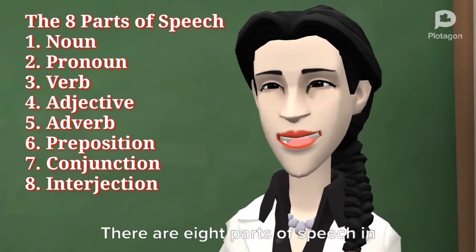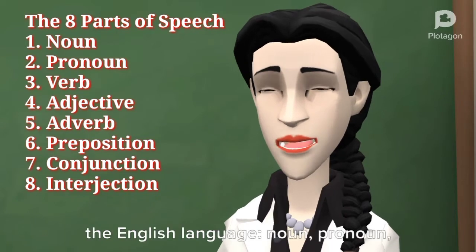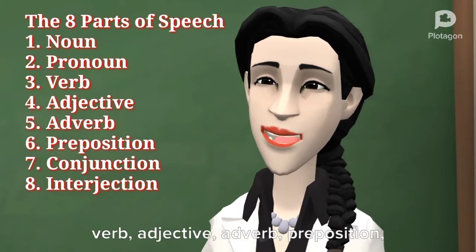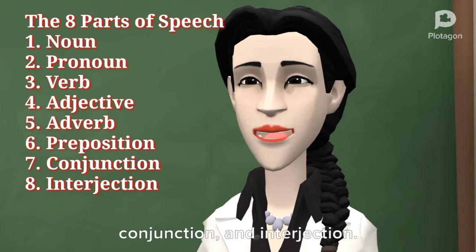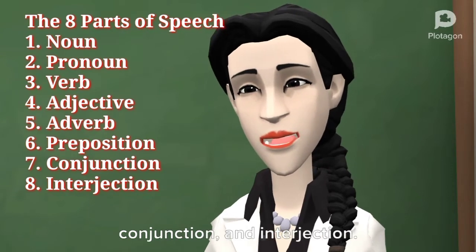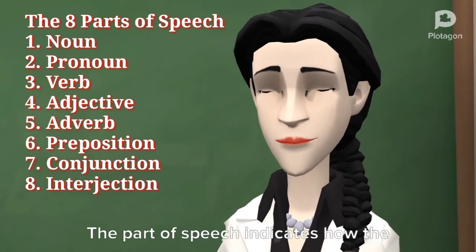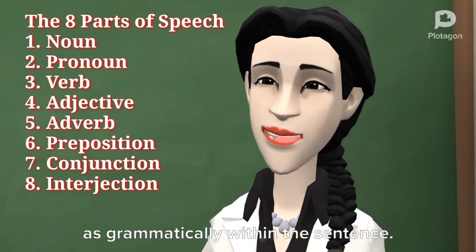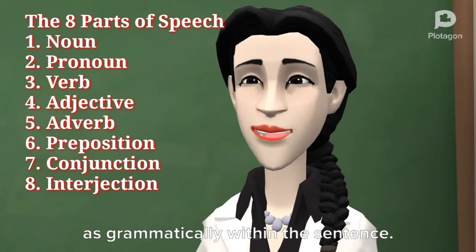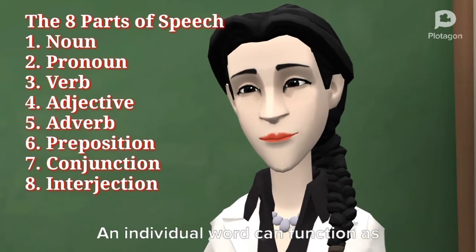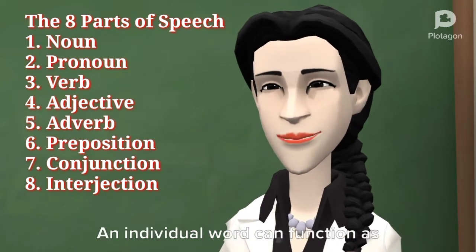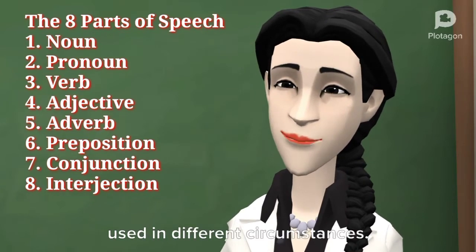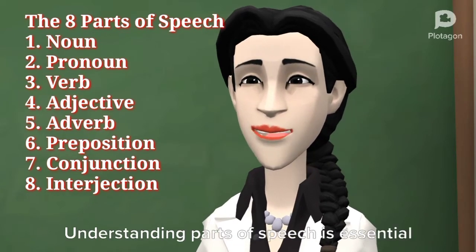There are 8 parts of speech in the English language: noun, pronoun, verb, adjective, adverb, preposition, conjunction, and interjection. The part of speech indicates how the word functions in meaning as well as grammatically within the sentence. An individual word can function as more than one part of speech when used in different circumstances.